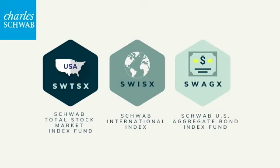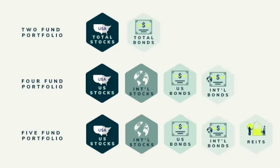Here are your Schwab ticker symbols for the Total Stock Market Index, International Index, and Aggregate Bond Index Fund. The three-fund portfolio is the most popular option, but if you want something simpler, you can do the two-fund portfolio.